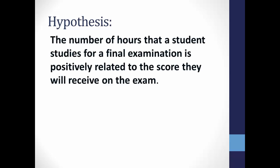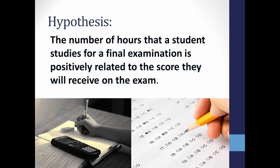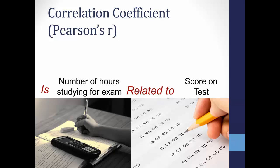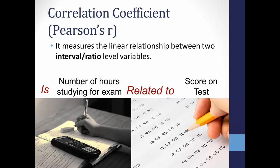For our example, we will test the hypothesis that the number of hours a student studies for a final exam is positively related to the score they will receive on that exam. Pearson's r is used when you are testing to see if there is a relationship between two continuous level variables — in this case, number of hours studying and score on the exam — because it measures the linear relationship between two continuous level variables.